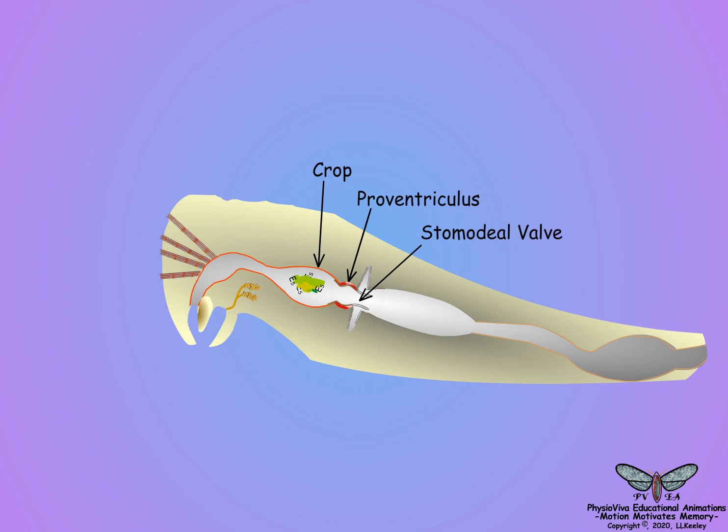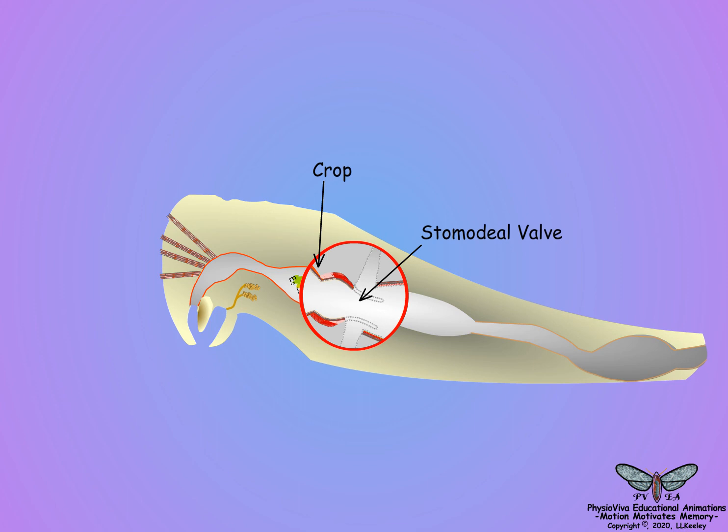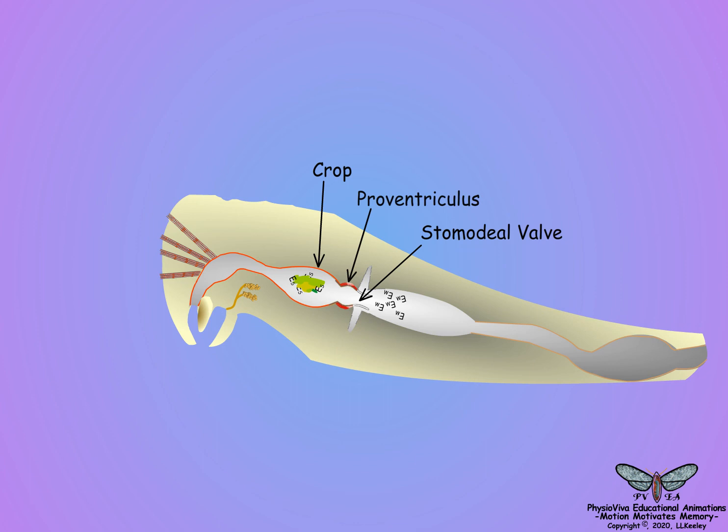The proventriculus may be a simple stomadial valve projecting into the midgut, or it may contain highly sclerotized tooth-like structures that crush solid food particles before they are moved into the midgut. The epidermal cells of the foregut do not secrete digestive enzymes. Nevertheless, some digestion occurs in the foregut by salivary enzymes mixed into the food during feeding.